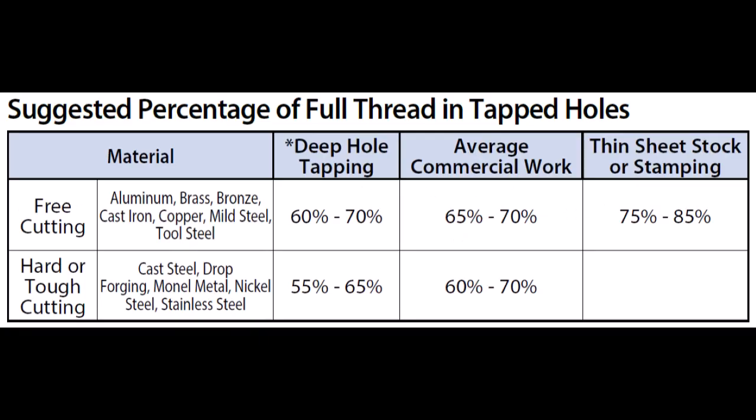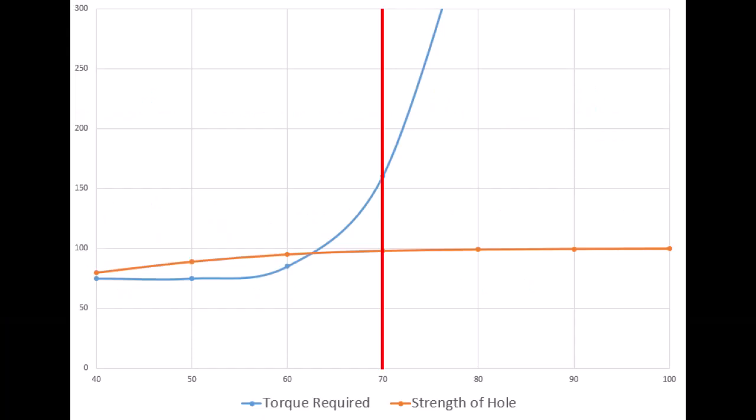Recommendations are typically around 70% thread engagement, but they may vary slightly for stronger or weaker materials, or with thin plates. 70% is a sweet spot. Additional engagement does not substantially increase the strength of the thread.